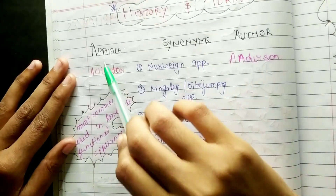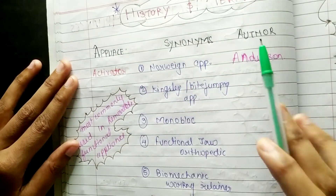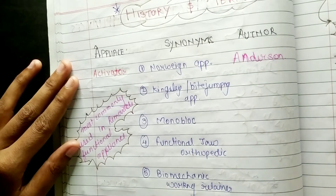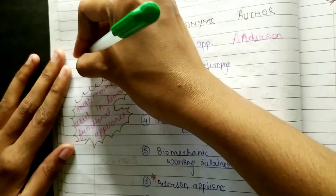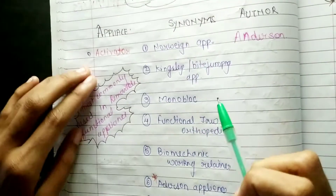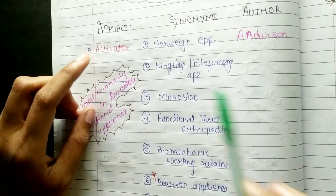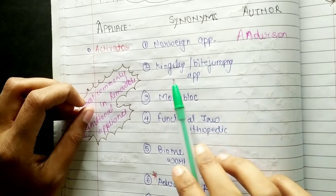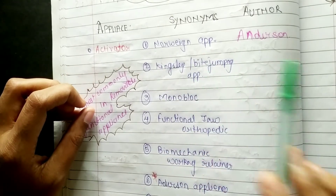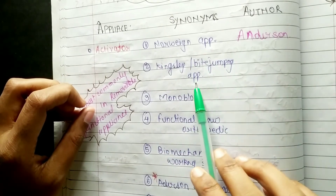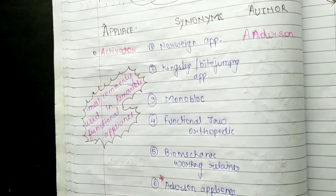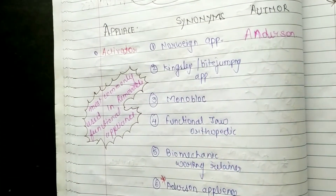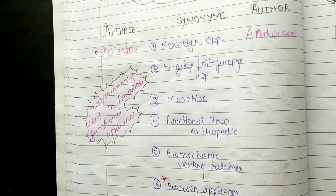First we will see the Activator appliance — its synonyms and which author discovered it. The synonyms of the Activator include: Norwen Appliance, Kingslay Appliance, and Bite Jumping Appliance.